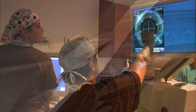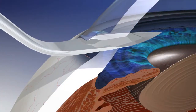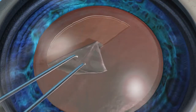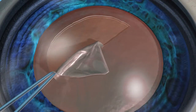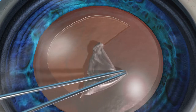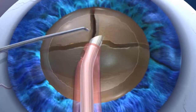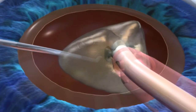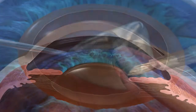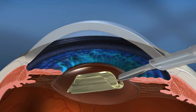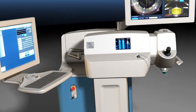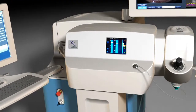Cataract surgery involves corneal incisions, capsular excision, a circular hole in the capsular bag, lens fragmentation, phacoemulsification, intraocular lens insertion, and incision closure. The LensX laser can assist with some of the most challenging steps.